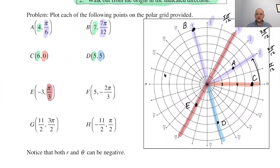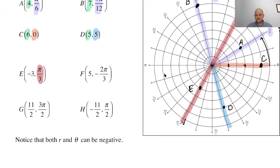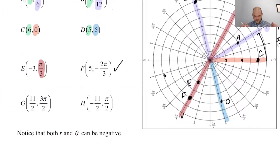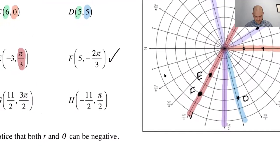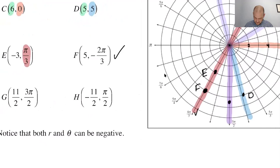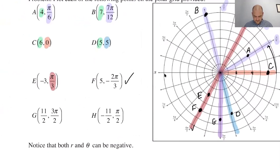For point F, theta is negative 2 pi over 3, which is coterminal with 4 pi over 3 — that's into the third quadrant. R is positive 5, so I face that direction and walk forward: one, two, three, four, five — that's point F. For point G, theta is 3 pi over 2 and R is eleven halves, so I face straight down and go out 5.5 units — that's point G.